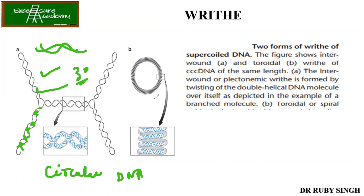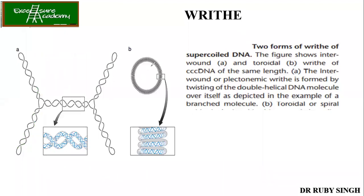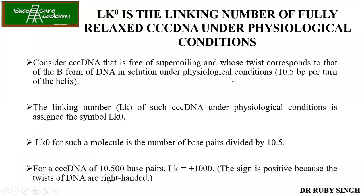The second type is the spiral or toroidal shape. You can see the already double-stranded DNA going in a spiral form like this. These are the two types of writhe. The linking number LK₀ is the linking number of fully relaxed CCC DNA under physiological conditions.